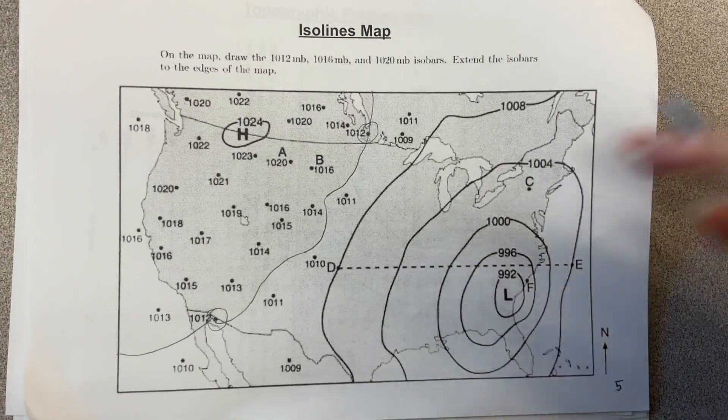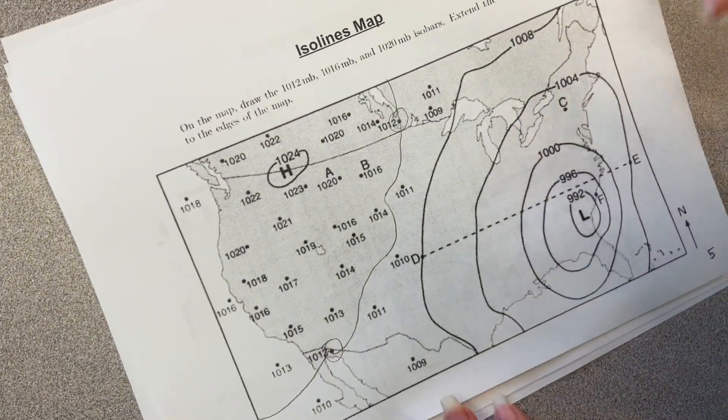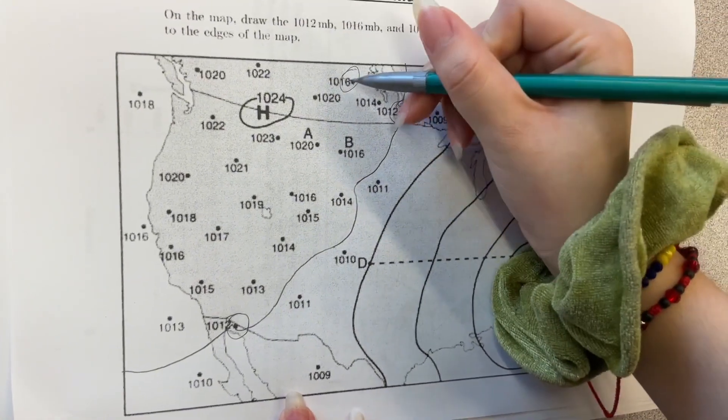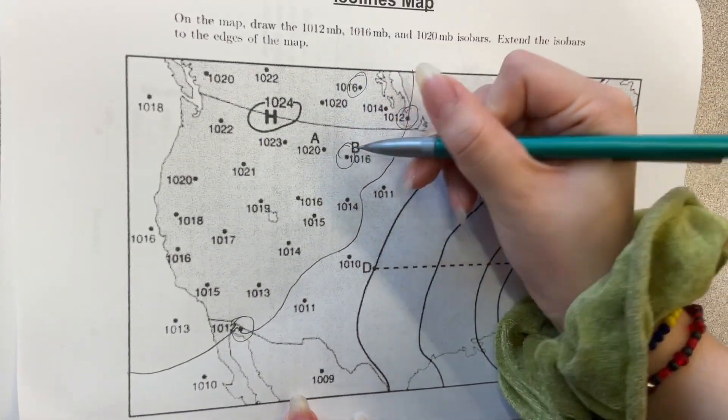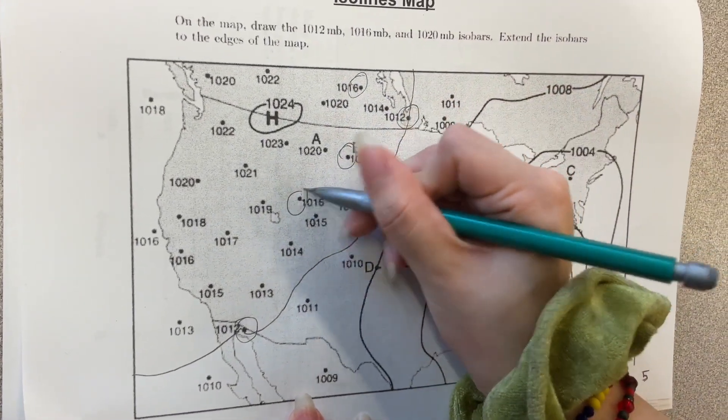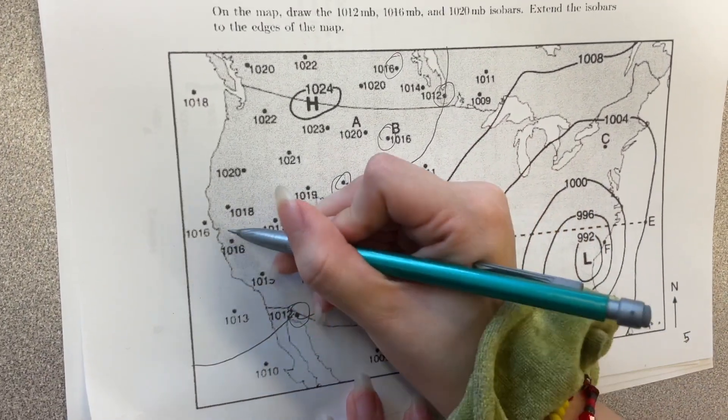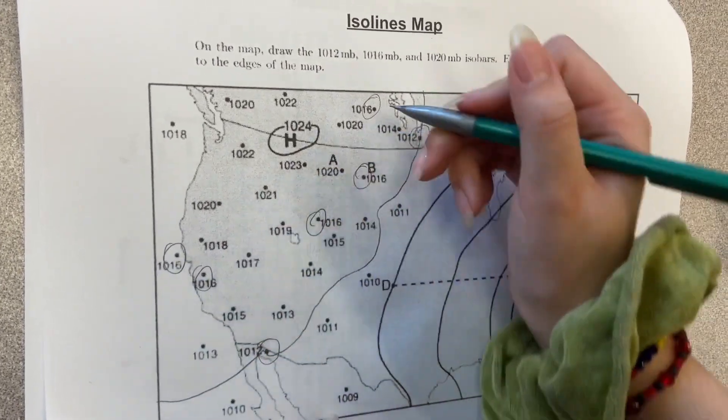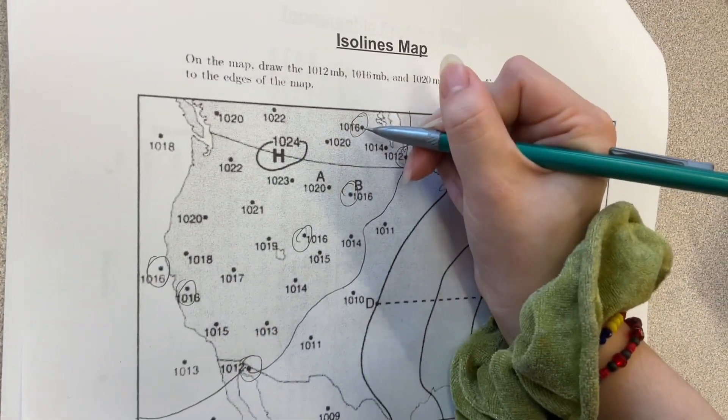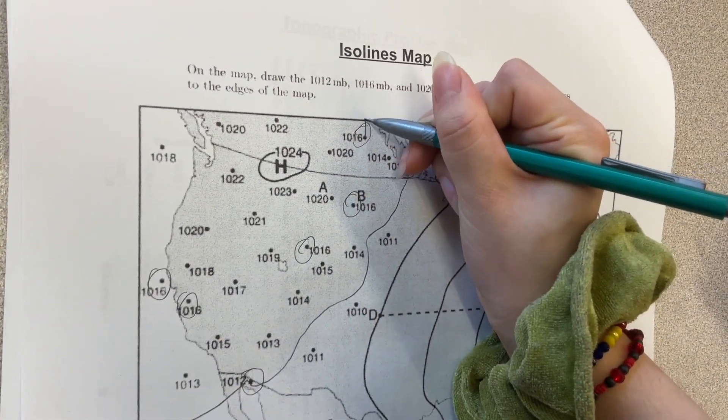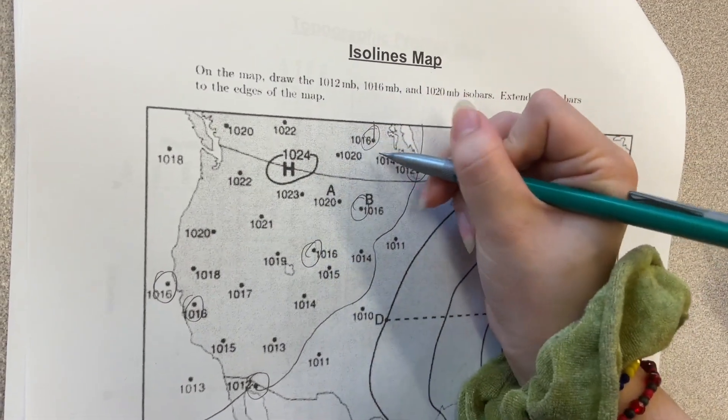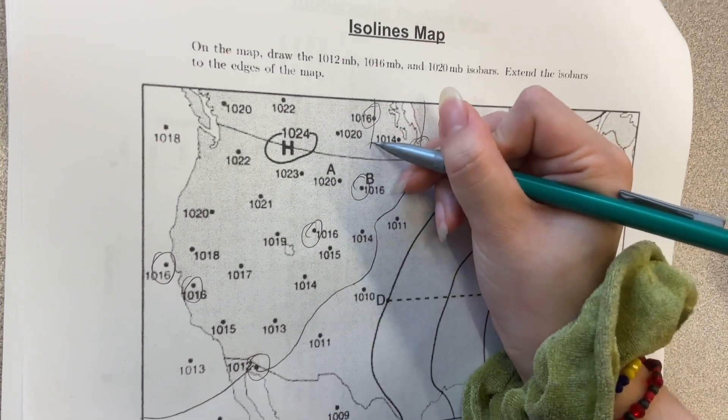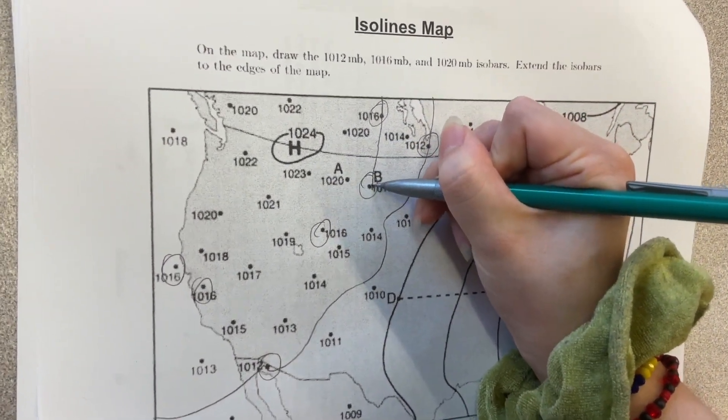So for the 1016, you can just do the same thing. First identify where all the 1016s are. So 1016, 1016, 1016, 1016, 1016, and I think that's it. So then connect here, you can connect it to the edge, and then you can draw your line through 1020 and 1014. And then connect it to your 1016.